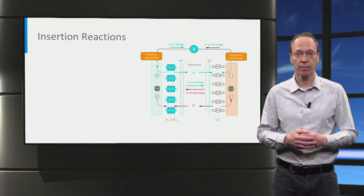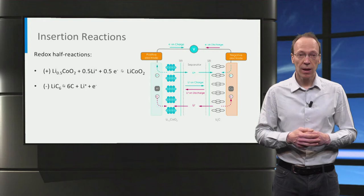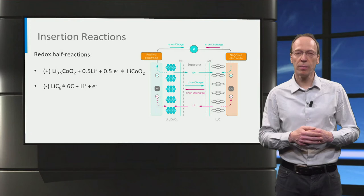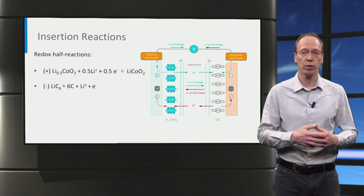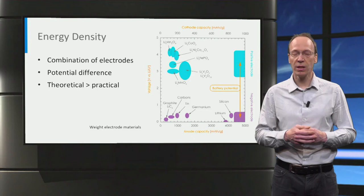From the battery redox reactions we can calculate the capacities of the electrodes, which you can practice during the exercises after this lecture. Here you see the redox reactions of both electrodes, which to the right represent discharging of the battery. These are called insertion reactions because the lithium ions are inserted into a host material at the negative and positive electrode as the battery charges and discharges respectively.